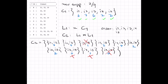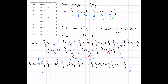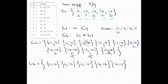Now we build L2, the set of frequent item sets of size two that satisfy the minimum support threshold — those with a count greater than or equal to two. L2 contains: {I1,I2}, {I1,I3}, {I1,I5}, {I2,I3}, {I2,I4}, and {I2,I5}.